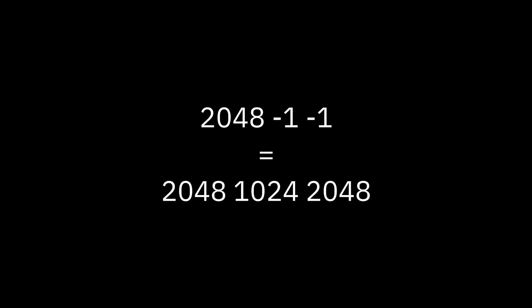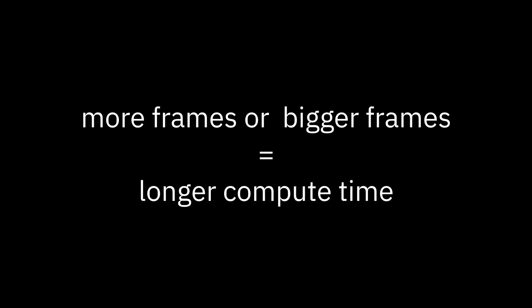For example, an FFT setting of 2048, -1, -1 translates to 2048, 1024, 2048. For the hop size it is always half the window, and the FFT size will match the window size. Because everything is offline, you don't have to worry so much about the latency introduced by changing FFT settings, but you have to be wary that they can drastically increase the time taken for a process to finish.